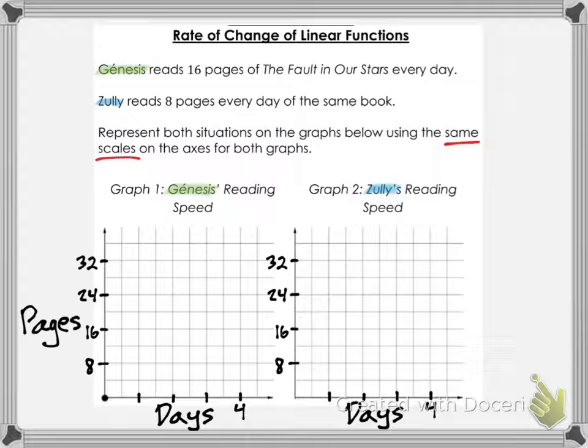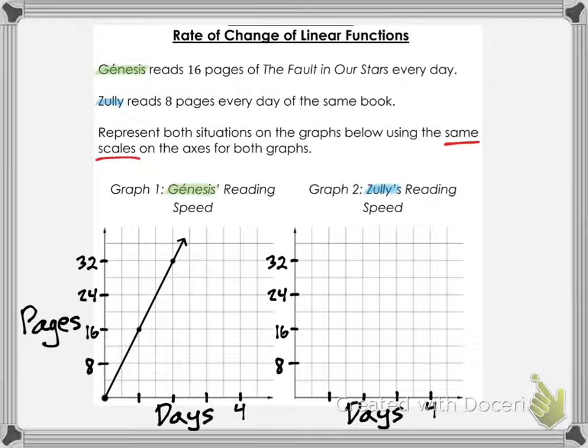When Genesis is reading on day 0, she hasn't read anything yet, so the first dot is at (0, 0). If no days have passed, she hasn't read any pages. After 1 day she would have read 16 pages, and after 2 days she would have read 32 pages. There is our line representing the amount of pages that she reads.